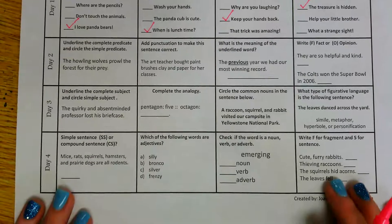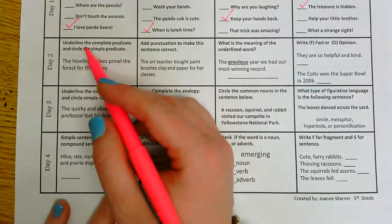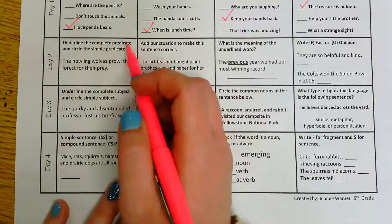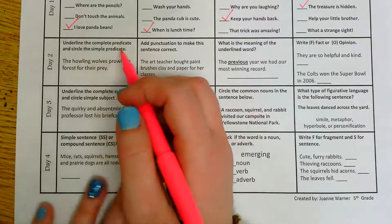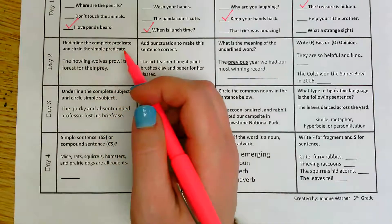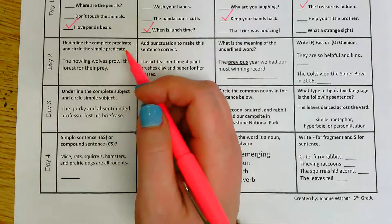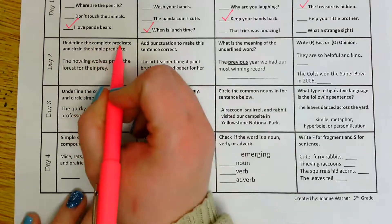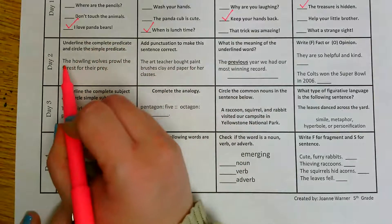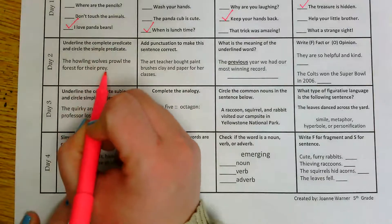Alright, for day two or what you should have completed on Tuesday, our first box says underline the complete predicate and circle the simple predicate. Okay, so remember with the predicate we are talking about the action of the sentence, so what our subject is doing. So it says to underline the complete predicate. My sentence says the howling wolves prowl the forest for their prey.